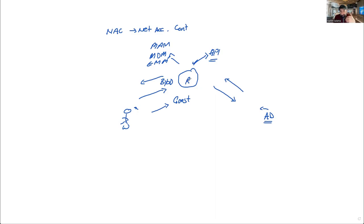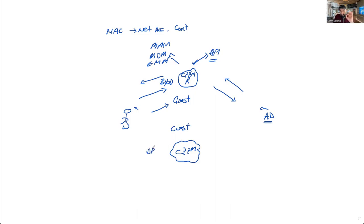At the core of any NAC is ClearPass Policy Manager, which is the RADIUS component — the authentication engine. Around it are supporting features: Guest, OnBoard (BYOD), OnGuard (health check), and third-party integrations. All of these are supporting applications or features that come with the ClearPass system, enabling a complete NAC solution.